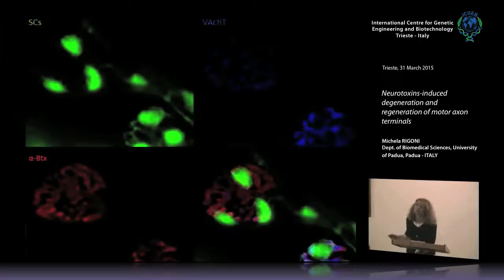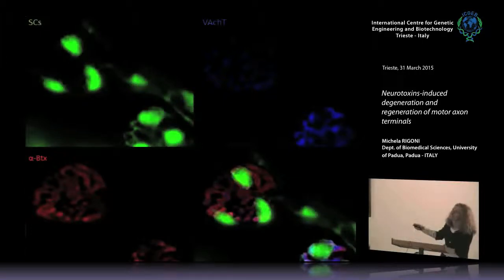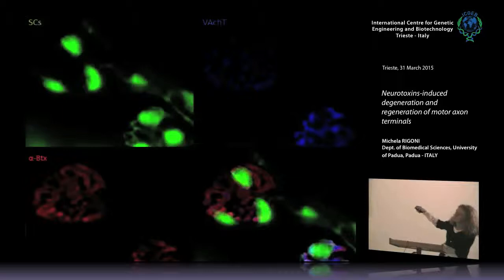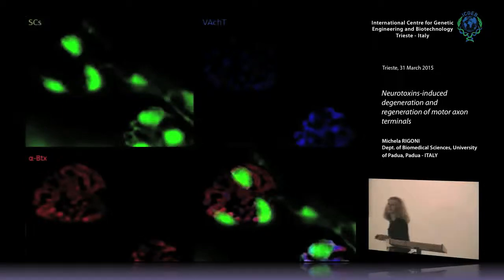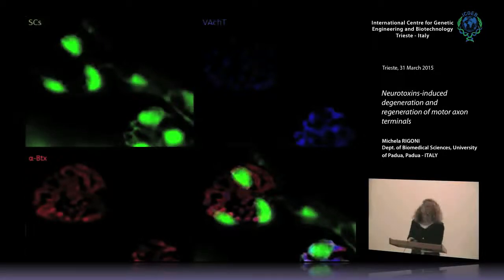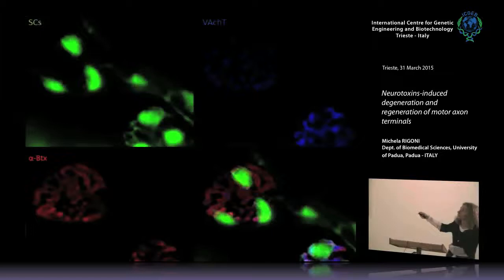These pictures are taken from transgenic mice that express green fluorescent protein in the cytoplasm of Schwann cells — both the myelinating cells that wrap the axon, and the terminal Schwann cells that are in close contact with the presynaptic sites. Our laboratory has always been interested in toxins, in particular neurotoxins: the famous botulinum neurotoxins, the tetanus neurotoxin, and snake neurotoxins — all of which target the presynaptic nerve terminal.